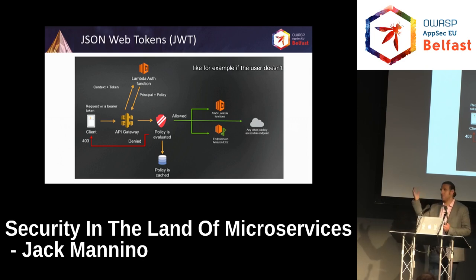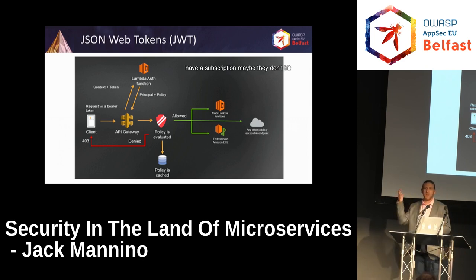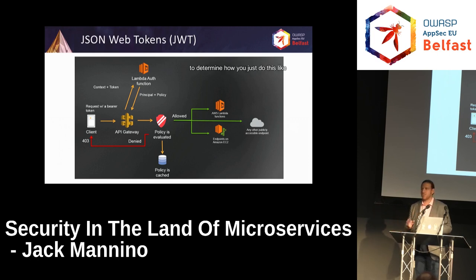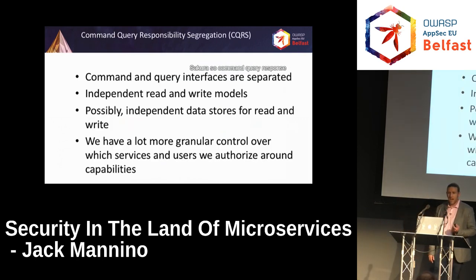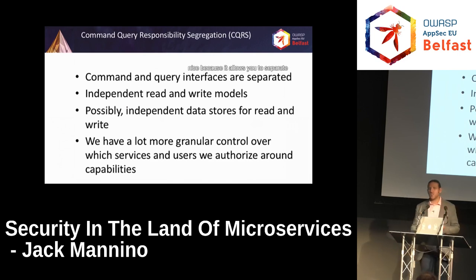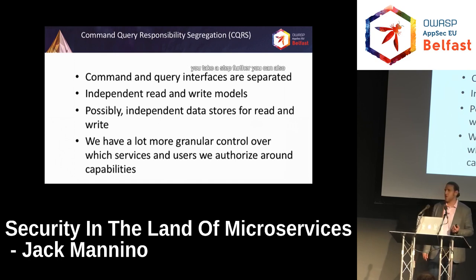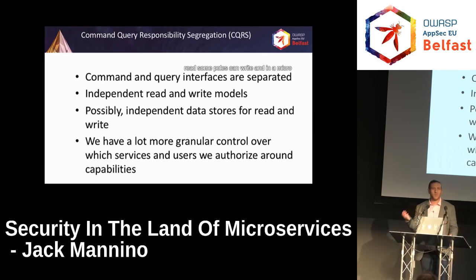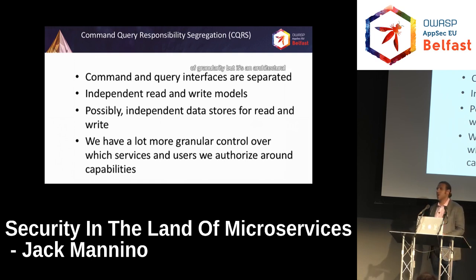You can do things at the gateway — for example, if a user doesn't have a subscription, maybe they don't hit a service that requires one. CQRS: Command Query Responsibility Segregation is a really cool pattern we can also use for security. CQRS is nice because it allows you to separate your read and write interfaces, and you can translate those down to actual models where some calls can read and some can write. In a microservice world where things are complex, it's nice to have that level of granularity.